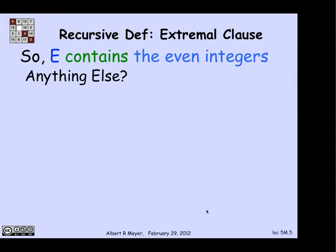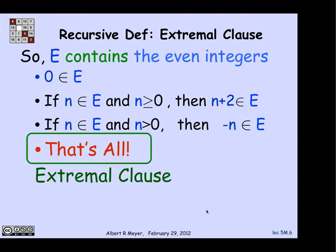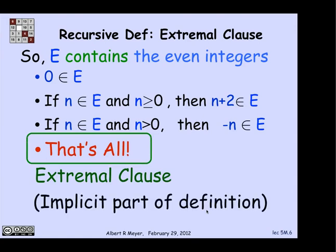So we've just figured out that E contains the even numbers. Is there anything else in E? And the answer is no. And the reason is that an implicit part of the understanding of a definition like this is that the only way that things can get into E is by being a base case or by being constructed from previously constructed elements by applying the constructor rules. In other words, there's an implicit clause here that says, that's all. That implicit clause is called the extremal clause. And it's taken for granted and rarely mentioned explicitly as part of a recursive definition. But it's always to be understood.